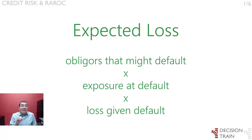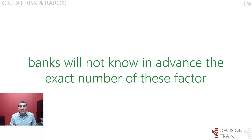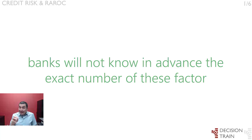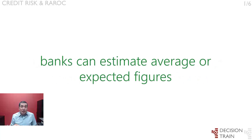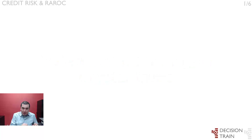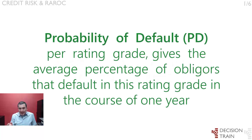Of course, banks will not know in advance the exact number of defaults in any given year, nor the exact amount outstanding, nor the actual loss rate. These factors are random variables, but banks can estimate average or expected figures. As such, the three factors mentioned above correspond to the risk parameters upon which the Basel II IRB approach is built. Probability of default, PD, per rating grade gives the average percentage of obligors that default in this rating grade in the course of one year.